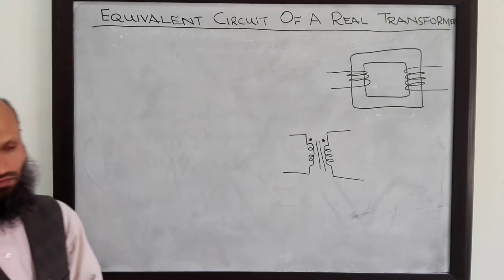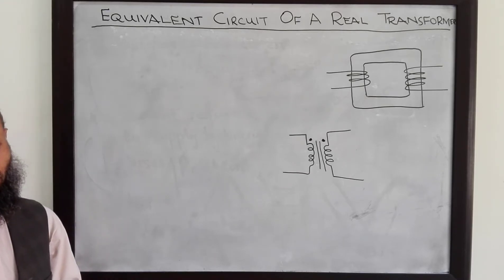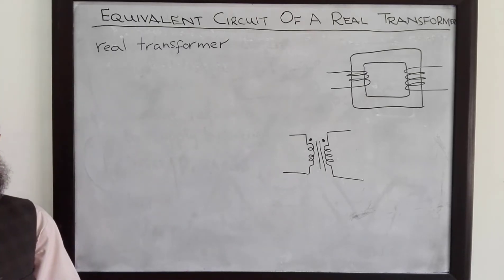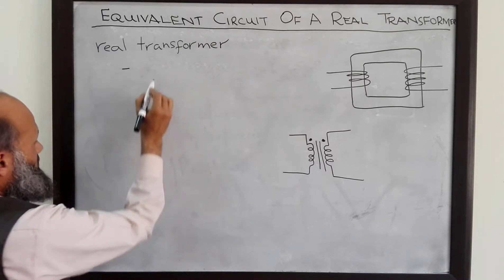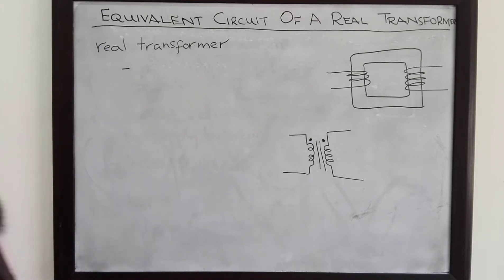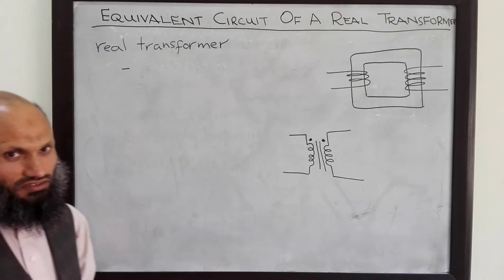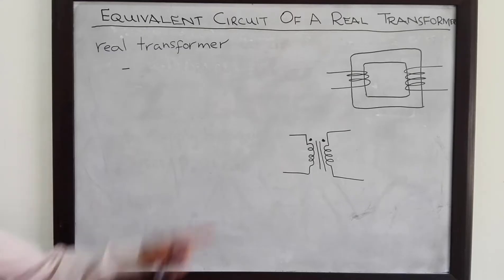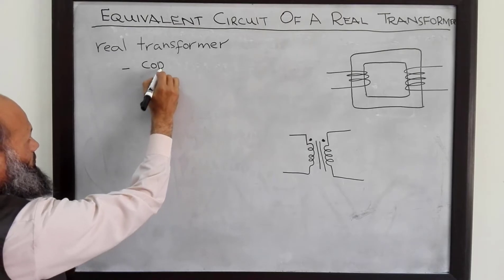An ideal transformer is a lossless device and the reluctance of its core is zero. For a real transformer, it is not a lossless device. There are different reasons for losses. The first is that the primary and secondary windings have resistance, and when current flows through them there will be I²R losses — these are called copper losses.